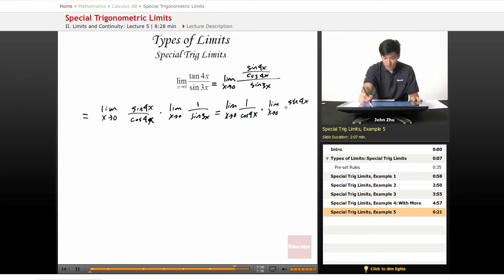And we know that this generates a 1 over cosine of 0, and this generates a 4 thirds.